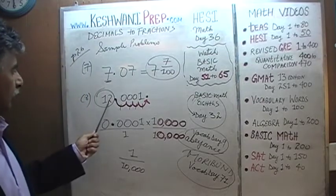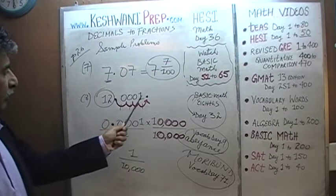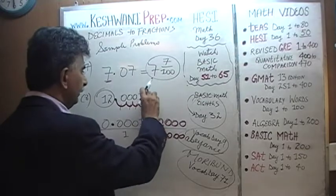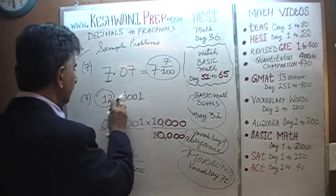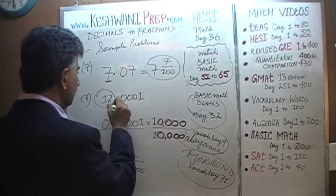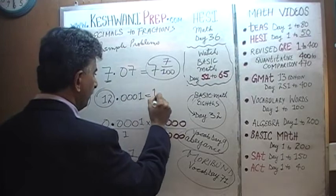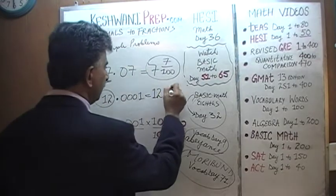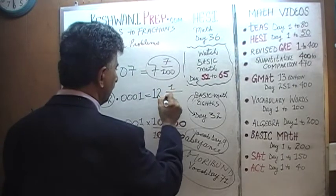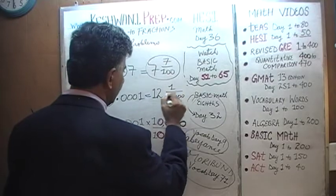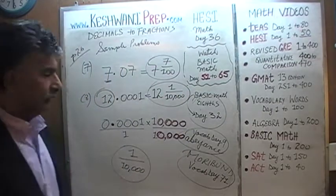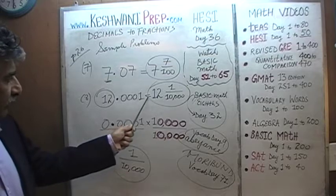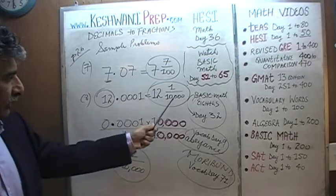So 12.0001 — it turns out it is simply 12 and 1/10,000. That's your answer. 12.0001 is simply 12 and one ten-thousandth.